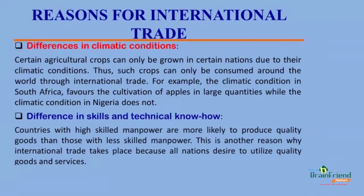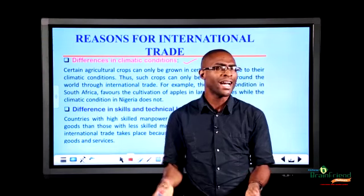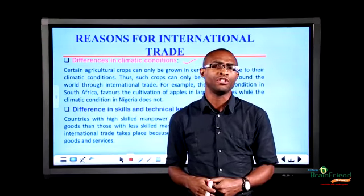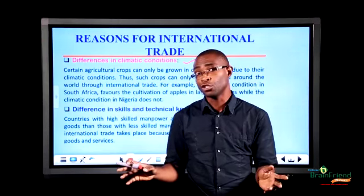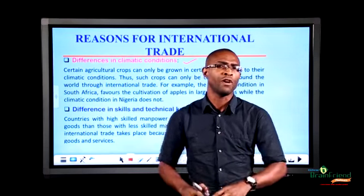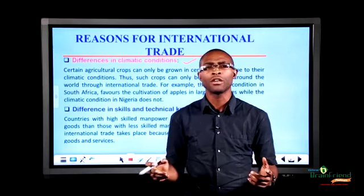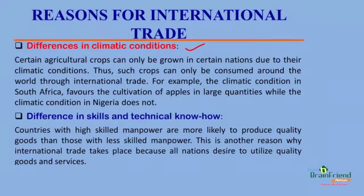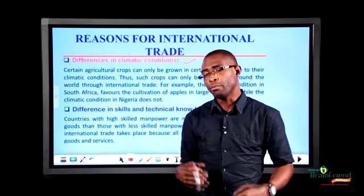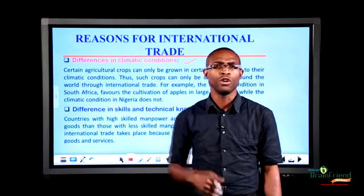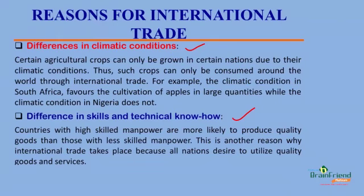The second reason is differences in climatic conditions. Certain agricultural crops do better under certain climatic conditions. For example, we cannot grow apple here based on our climatic condition, but when you take apple to South Africa, it thrives because the climatic condition is suitable for apple production. That means we in Nigeria can eat apple because of international trade. Furthermore, differences in skills and technical know-how is another reason. Certain nations do not have skilled manpower and need to bring in skilled technicians to run their industries.